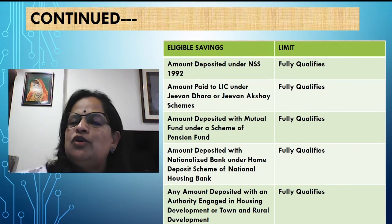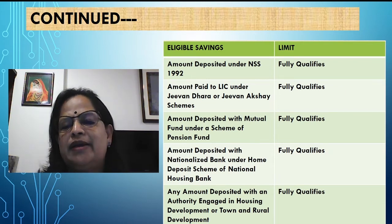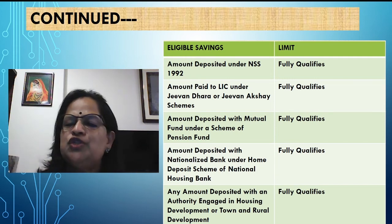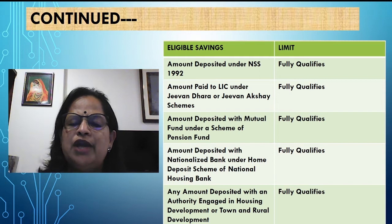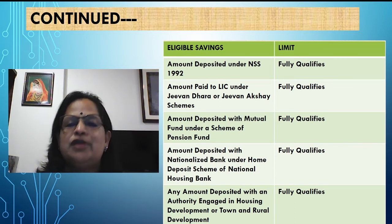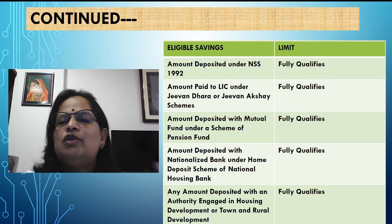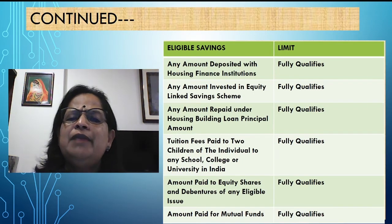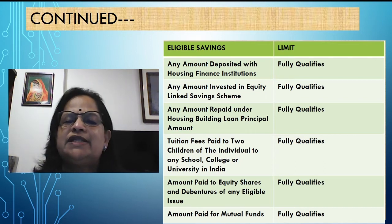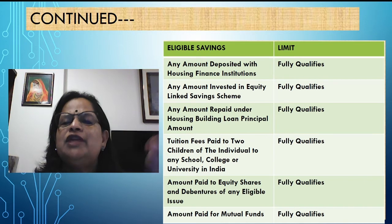80C deduction means the total investment in all these instruments can be made up to 1,50,000 and reduced from gross total income. Amount deposited with a nationalized bank under the Home Deposit Scheme of National Housing Bank fully qualifies. Any amount deposited with an authority engaged in housing development or town and rural development — such as Bangalore Development Authority, Greater Cochin Development Authority, Calicut Development Authority — fully qualifies. Any amount deposited with housing finance institutions like Canara Bank Housing Finance or SBI Housing Finance also fully qualifies.